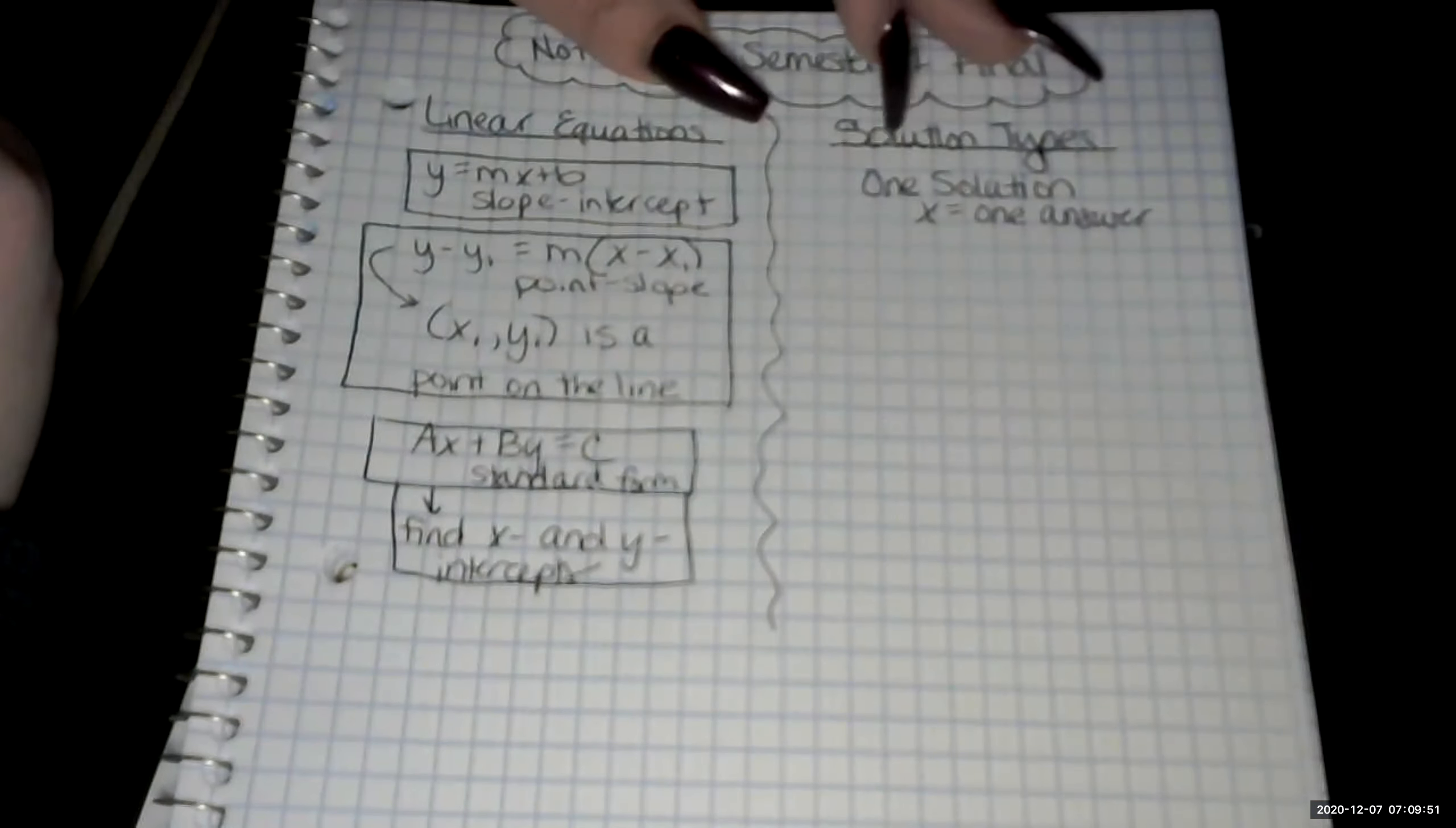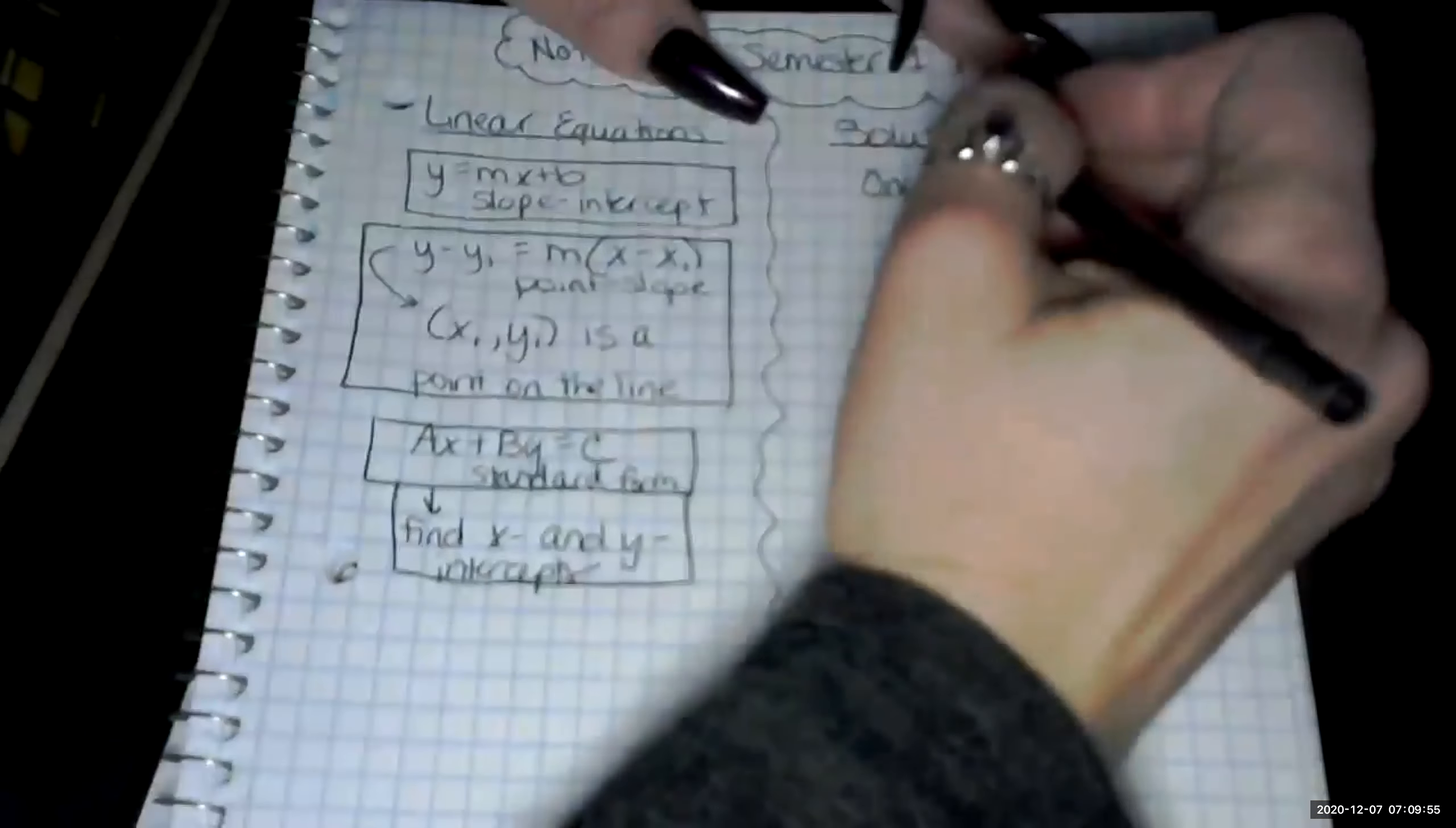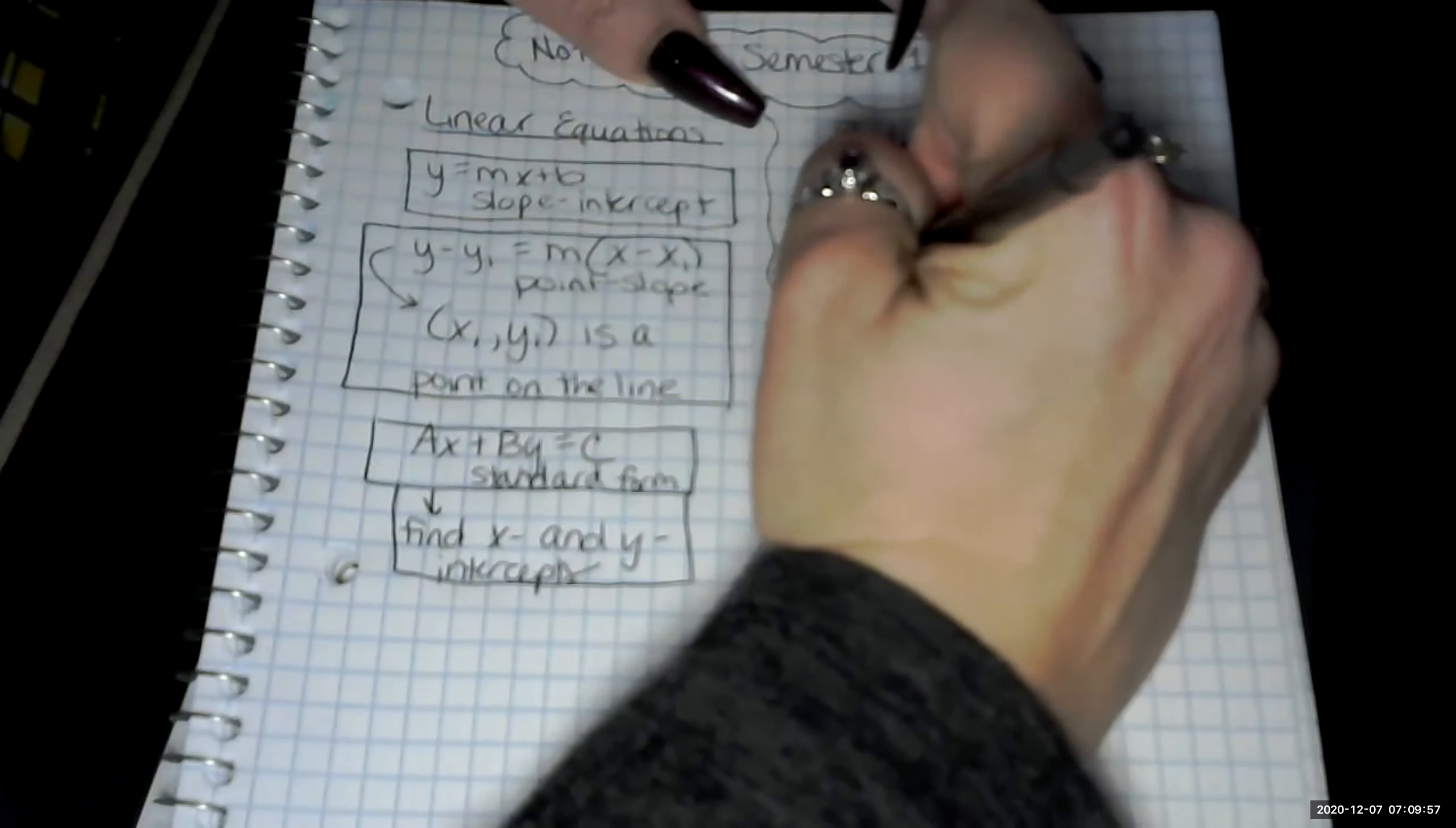So when you're solving and you figure out what the variable equals, that's one solution. We also had infinitely many solutions.